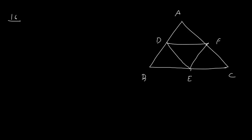As D and E are midpoints, by midpoint theorem, side DE is going to be half of AC. And as F is the midpoint, this part equals this part equals this part — so these three parts are equal. In the same way, you can prove that the other sides are also equal in corresponding parts.